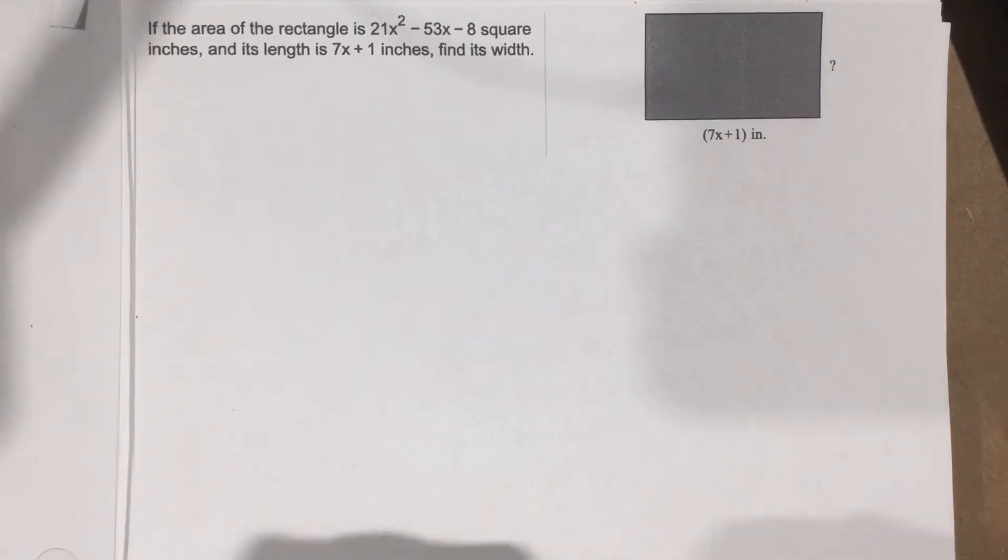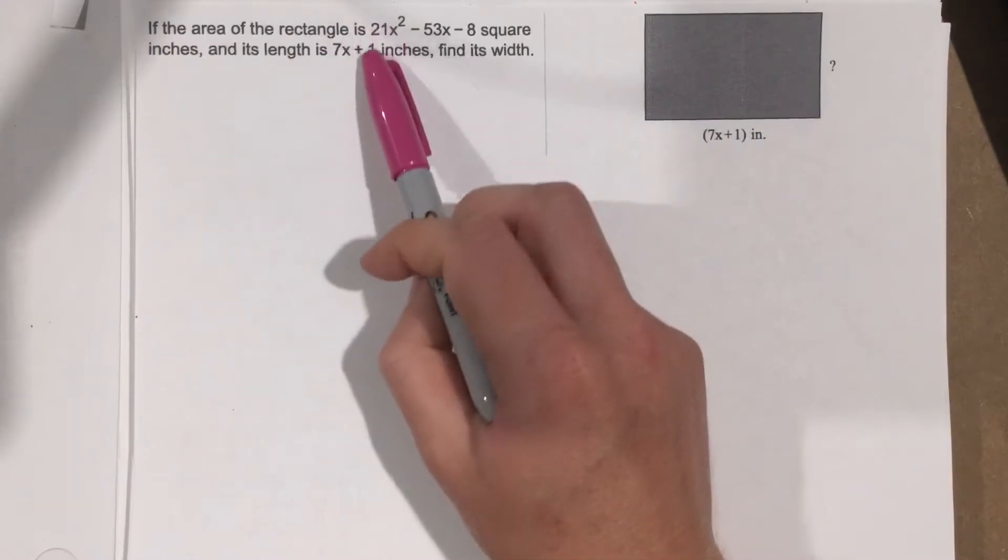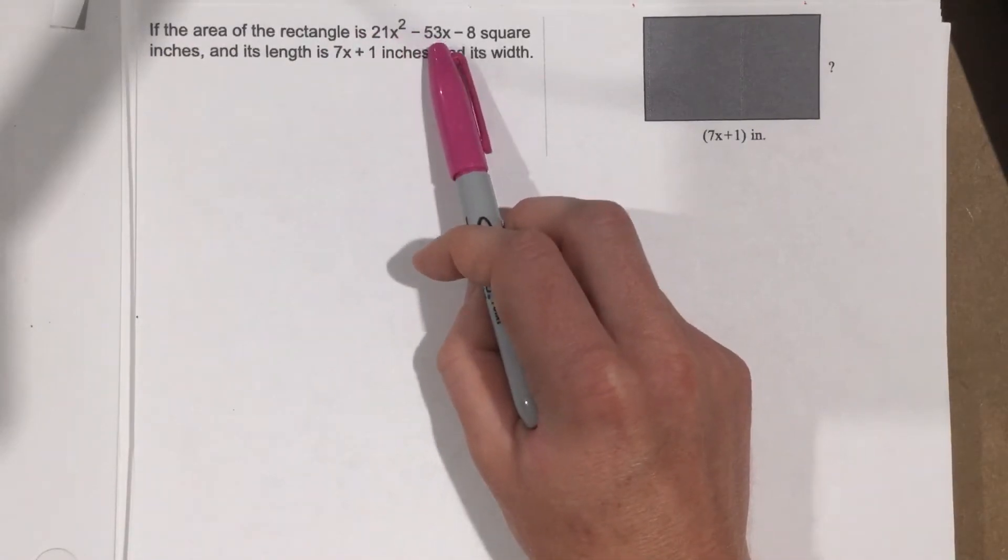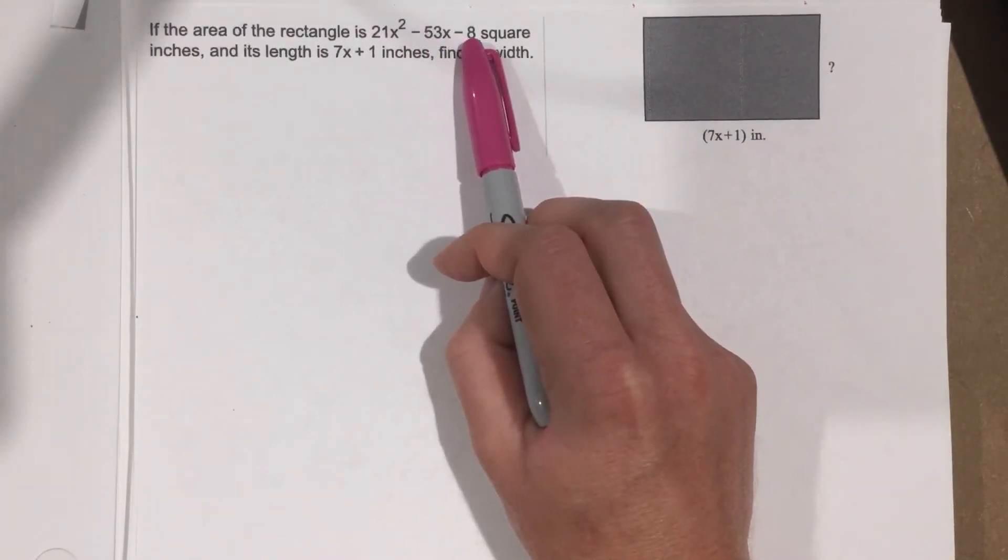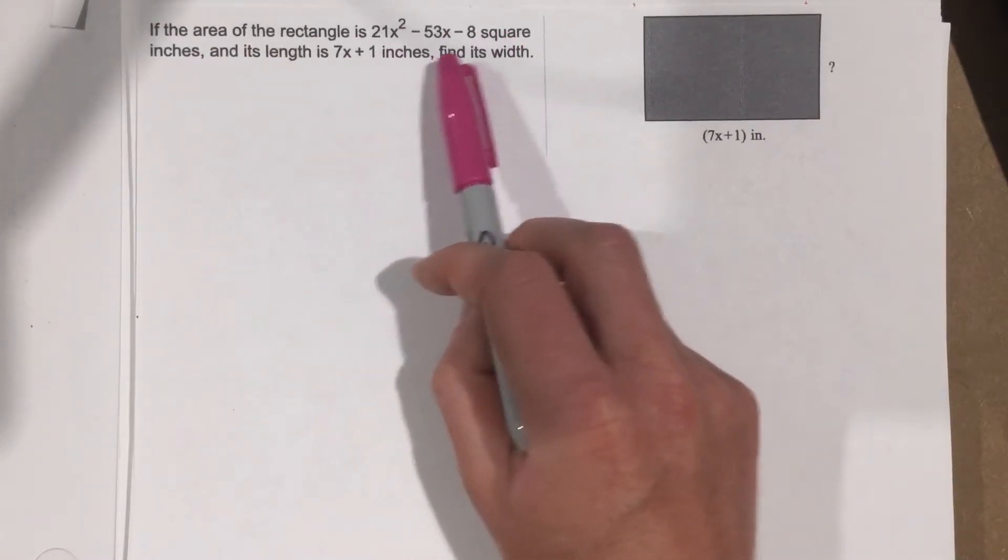This is problem number 10 from section 4.3. The problem says if the area of the rectangle is 21x squared minus 53x minus 8 square inches, and its length is 7x plus 1, find its width.